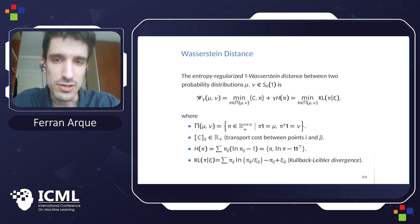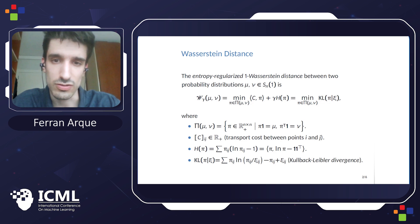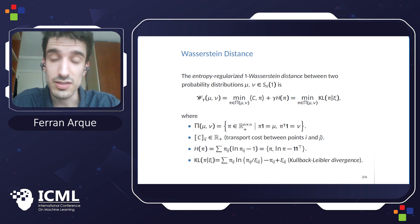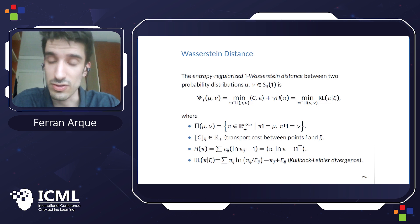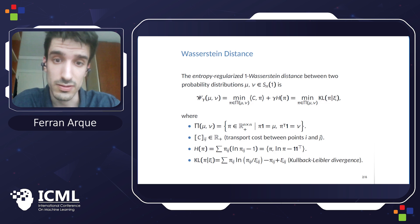The fundamental tool we will use for our approach is the entropy-regularized Wasserstein distance, which basically consists in minimizing the total cost of transporting one measure to the other, plus a regularization term. This additional term is what ensures uniqueness of the solution, and it also allows us to write the problem as the minimization of a KL divergence, which in turn opens the possibility of using fast iterative algorithms to solve it.